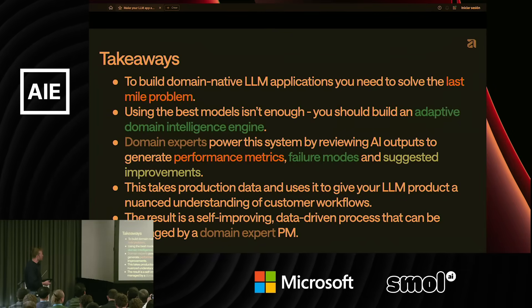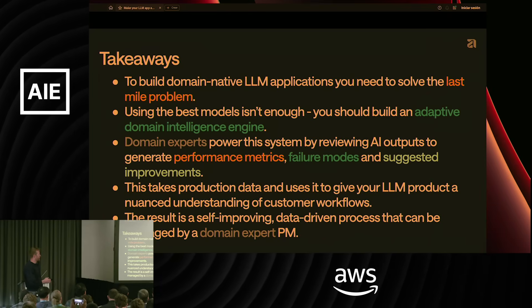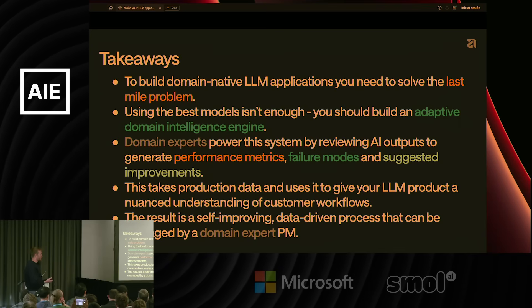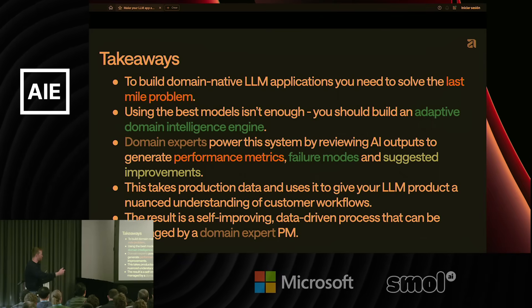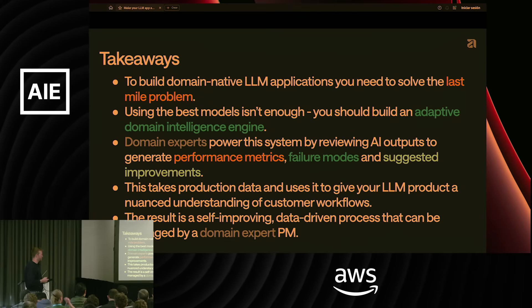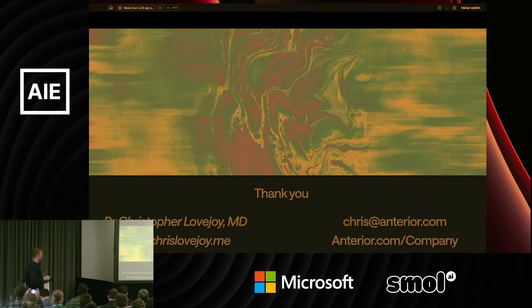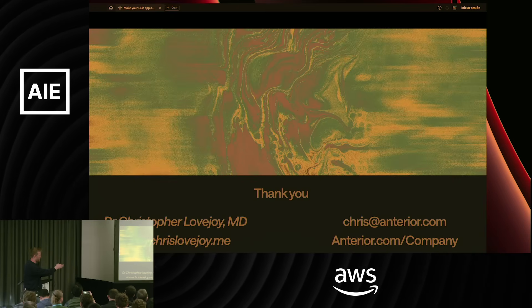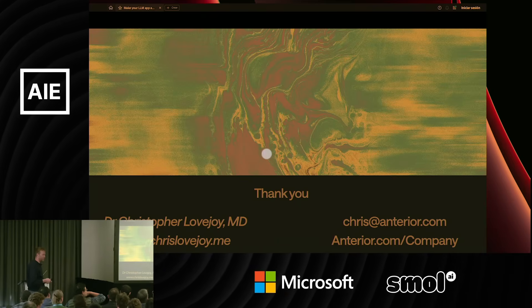Final takeaways: to build a domain-native LLM application, you need to solve the last mile problem. This isn't solved by using more powerful models or more sophisticated pipelines alone. You need what we call an adaptive domain intelligence engine. Domain experts power this system by reviewing AI outputs to generate metrics, failure modes, and suggested improvements. This takes production data live from inside your customer's context and uses it to give your LLM product nuanced understanding of customer workflows, continually iterating toward that final performance level. The end result is a self-improving, data-driven process managed by a domain expert PM sitting in the middle. Thank you. If you're interested in vertical AI applications, evals, or AI product management, I've written about that at chrislovejoy.me, and feel free to email chris@anterior.com. We're also hiring — check out anterior.com for open roles.